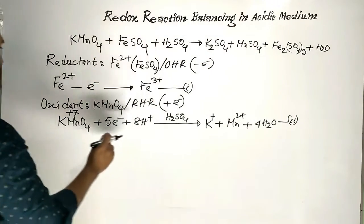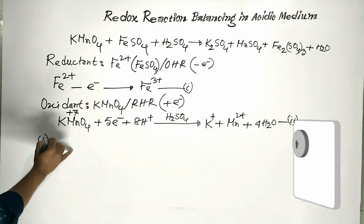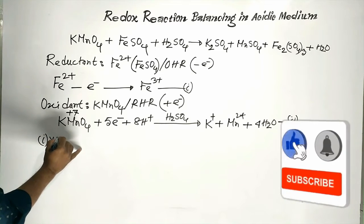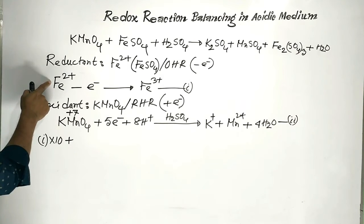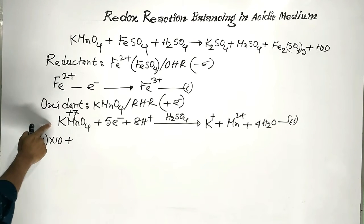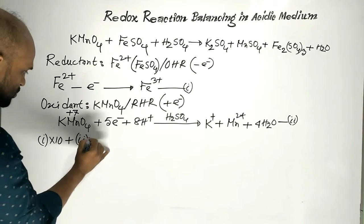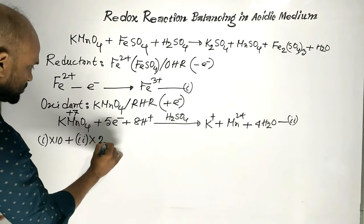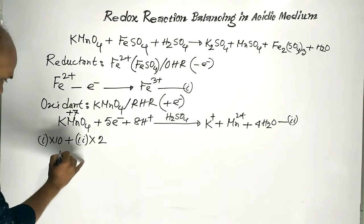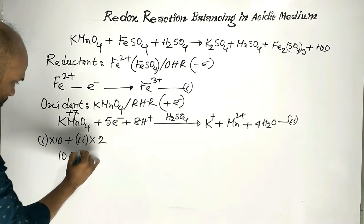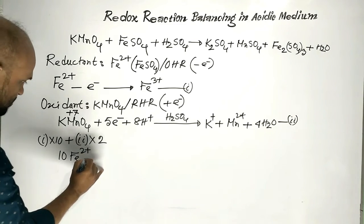Now, equation 1 is multiplied by 10. Then this is added to equation 2, but before this, equation 2 is multiplied by 2. From equation 1 we get: 10 Ferrous Ions minus 10 electrons.